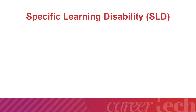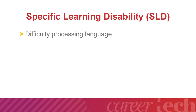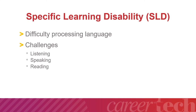We will start with Specific Learning Disabilities, which at 36% makes up the largest percentage of students in Oklahoma on IEPs. Students with SLD have difficulty processing language correctly, either as it enters or leaves their brain. The students have average to above-average intelligence, but due to the difficulty processing language, they have challenges with listening, speaking, reading, writing, spelling, and/or math.